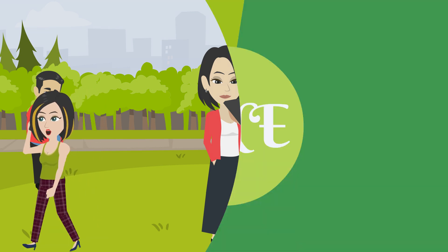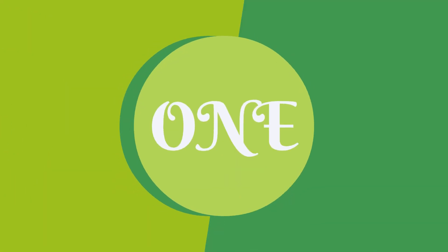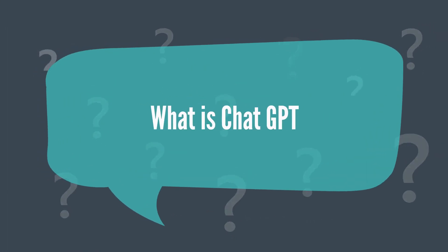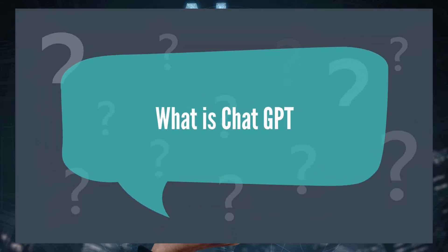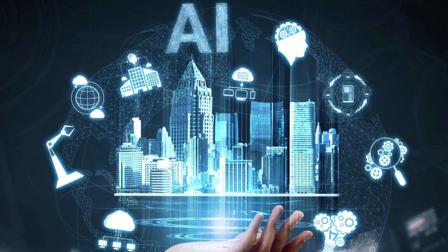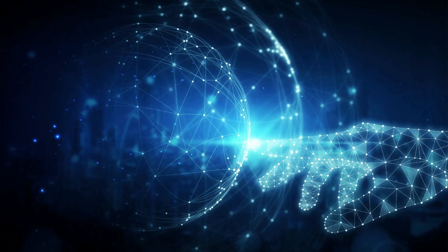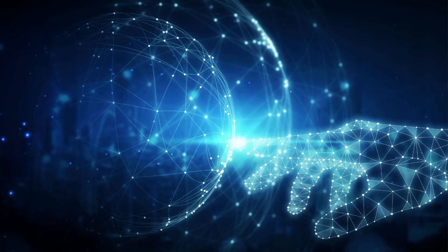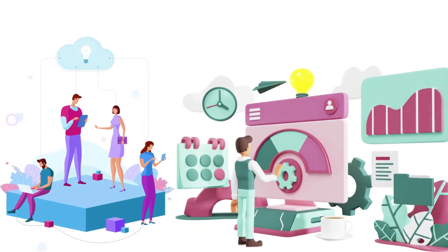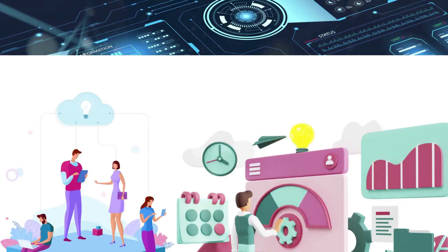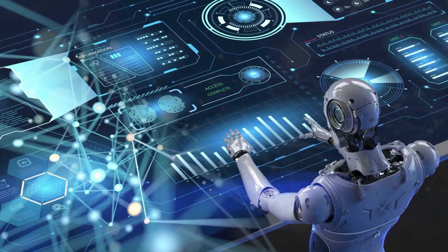Number one: what is ChatGPT? ChatGPT is an AI language model developed by OpenAI, based on the GPT (Generative Pre-trained Transformer) architecture. ChatGPT was developed by a team of researchers at OpenAI, a leading artificial intelligence research organization.